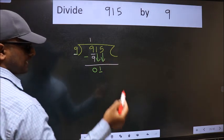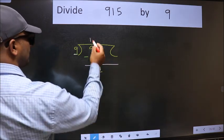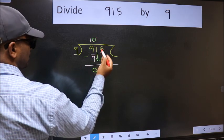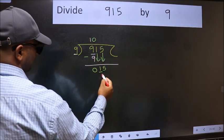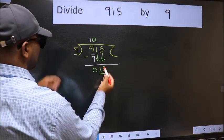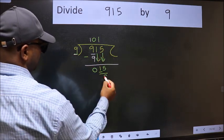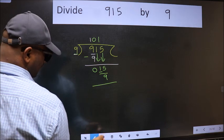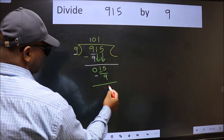And the rule to bring down second number is, we should put 0 here. Then only we can bring this number down. Now 15. A number close to 15 in 9 table is 9 once 9. Now we should subtract. We get 6.